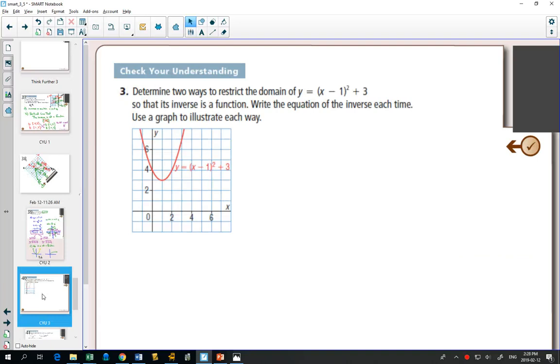So right now we have a parabola, and this parabola, if I draw a horizontal line, obviously doesn't pass the horizontal line test. There's lots of places where I could put that horizontal line which touches the graph twice.